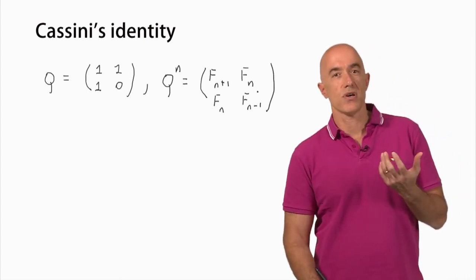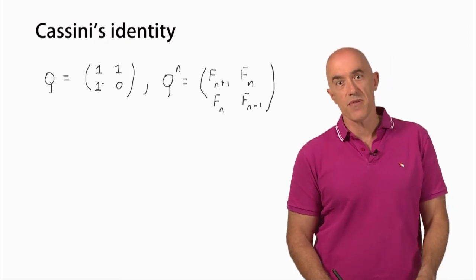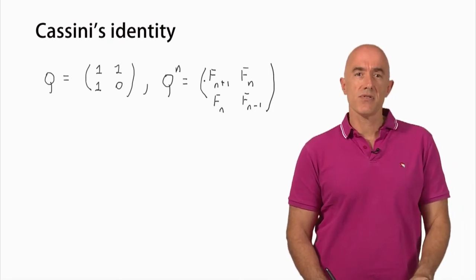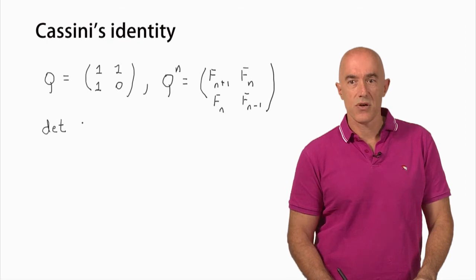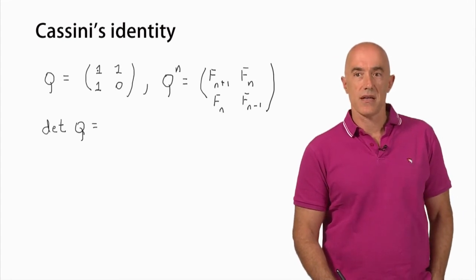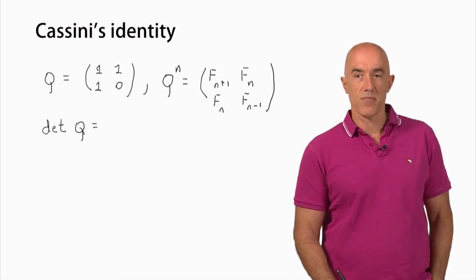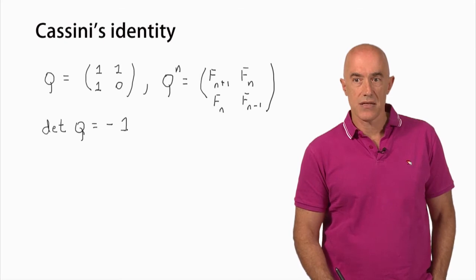So we had these two results: the definition of the Q matrix, and the result that Q raised to the nth power is related to Fibonacci numbers. From matrix algebra we have something called the determinant. For a two-by-two matrix it's very simple — you take the product of the diagonal elements minus the product of the off-diagonal elements. So for Q it's zero minus one, meaning the determinant of Q is minus one.